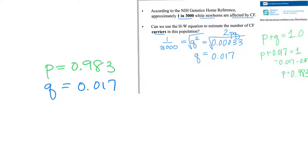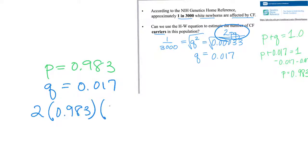Now that we have p equals 0.983 and q equals 0.017, we can find 2pq — the frequency of heterozygotes, or carriers of cystic fibrosis. We calculate 2 times p times q, which gives approximately 0.033.